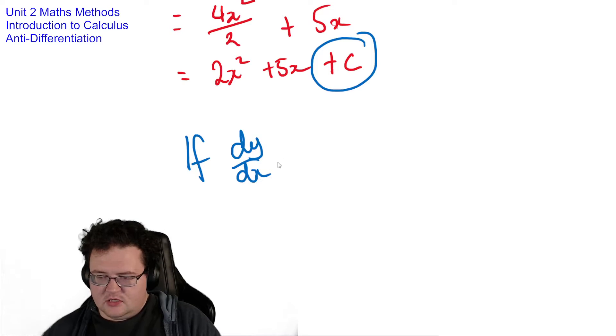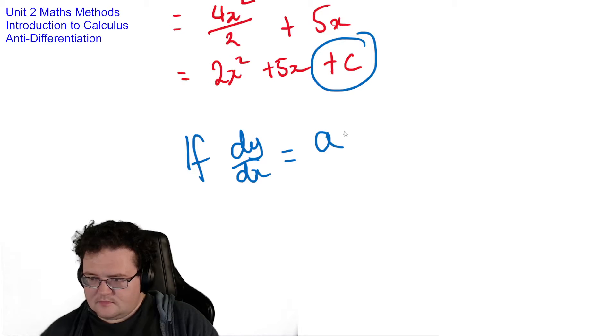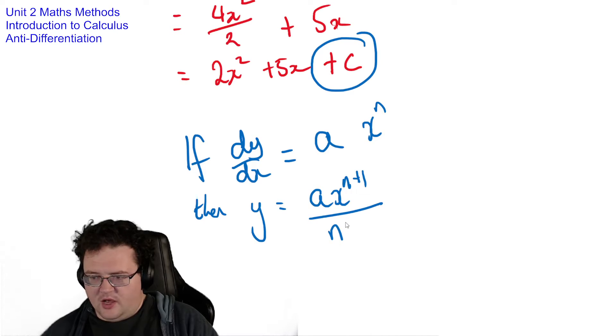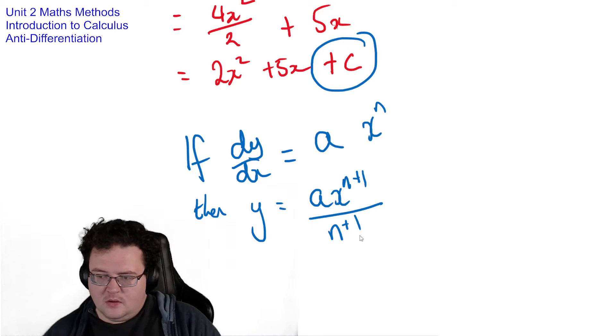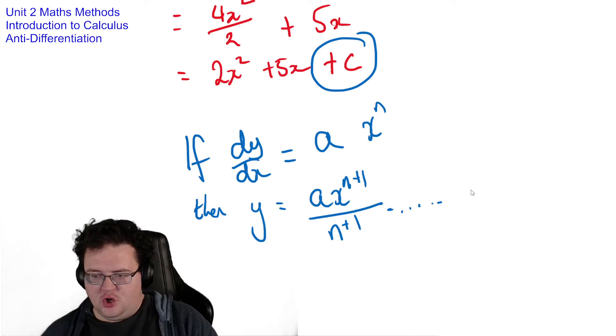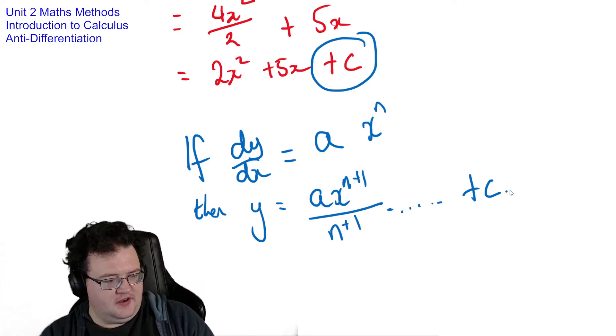So if dy dx equals ax to the n, then y equals ax to the n plus 1 divided by n plus 1, which is the new power, for every other term, plus c, constant on the end, can't forget the constant.